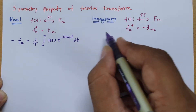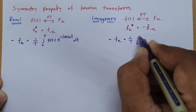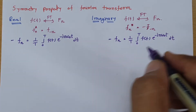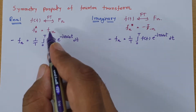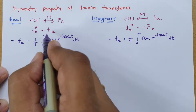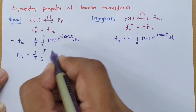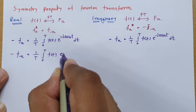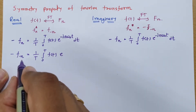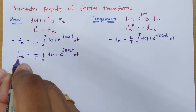I'll derive this for both the real and imaginary cases. Starting with F(-n): we replace n with −n in the formula, so the exponent becomes e^(+jnω₀t), since minus times minus gives plus. So F(−n) = (1/T) × integral from 0 to T of f(t) × e^(+jnω₀t) dt.